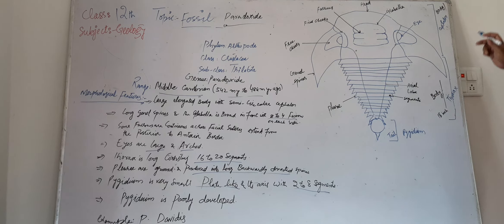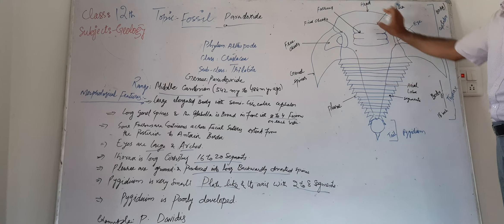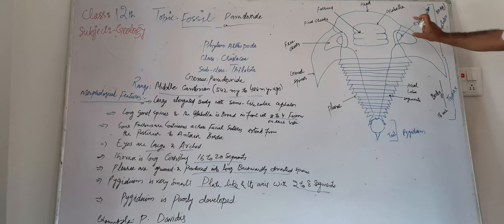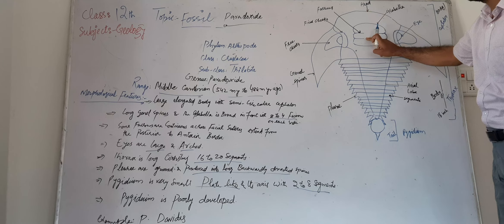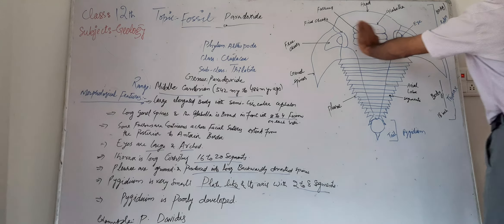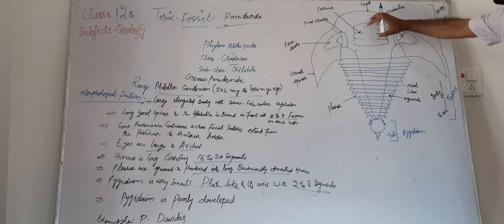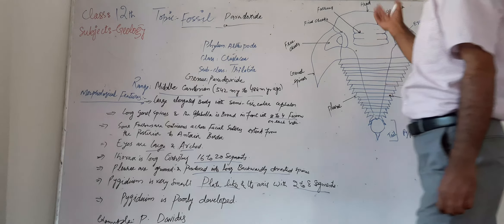Now we see some features in this head part. There are glabellar furrows which are continuous across the facial sutures of this head part, or we can say the glabella extends from the anterior to the posterior side of the border of this shell.